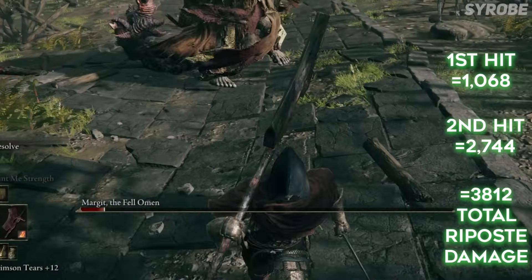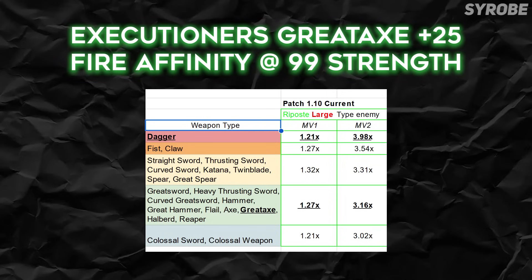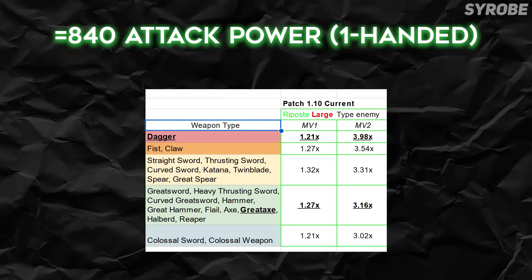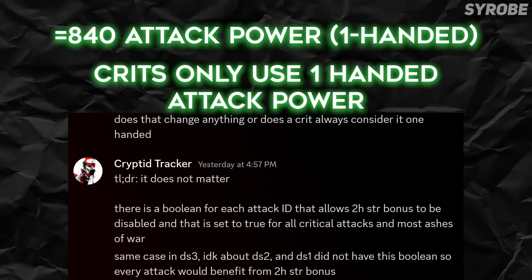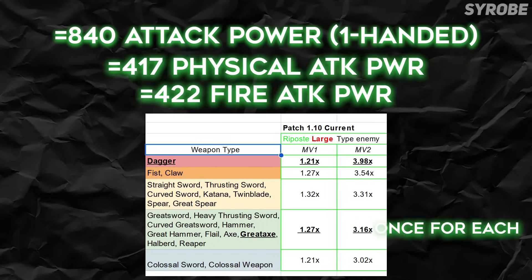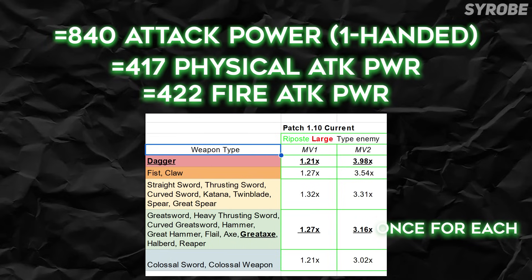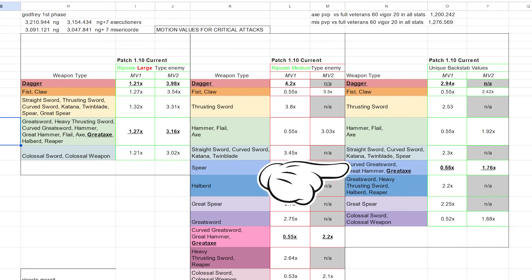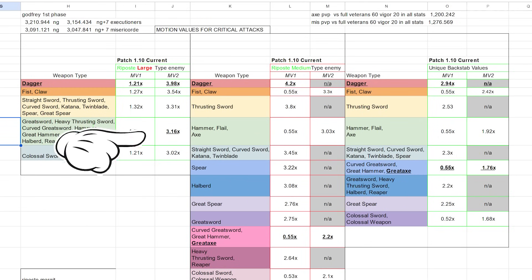For our litmus test, we'll be performing a repost attack on Margit, who is a large-type enemy. We have an arbitrary 99 Strength value and a fire affinity Executioner's Great Axe at plus 25, which gives you a total attack power of 840. It doesn't matter if you two-hand it — it will always be based on your one-handed attack power for specifically critical attacks. You need to first process the attack power of a weapon once per its damage type and once per motion value of that weapon's class, which also changes depending on the enemy's type and depending on if you're reposting or backstabbing. The Great Axe class will always have at least two motion values.